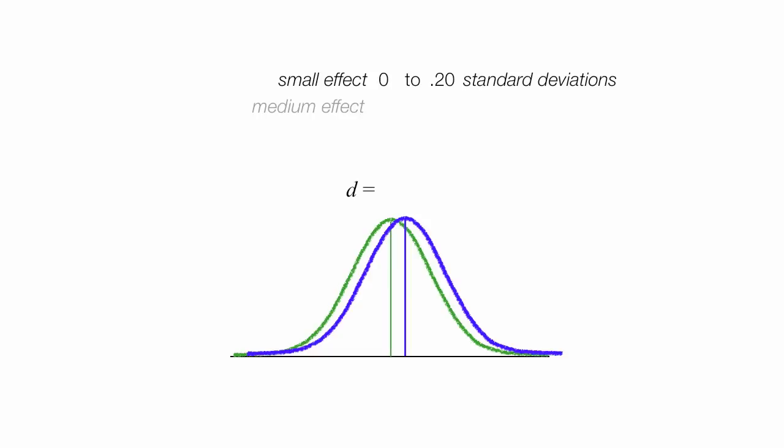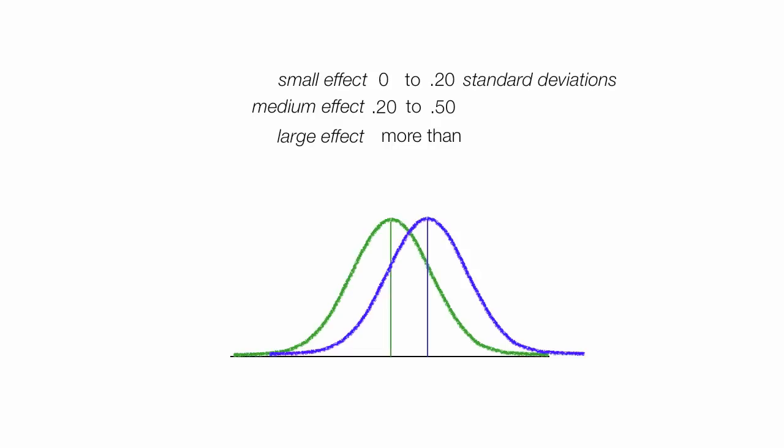A medium effect is anything from 0.20 to 0.50. And this is a medium effect. And a large effect is anything more than 0.50, when D is greater than 0.50.